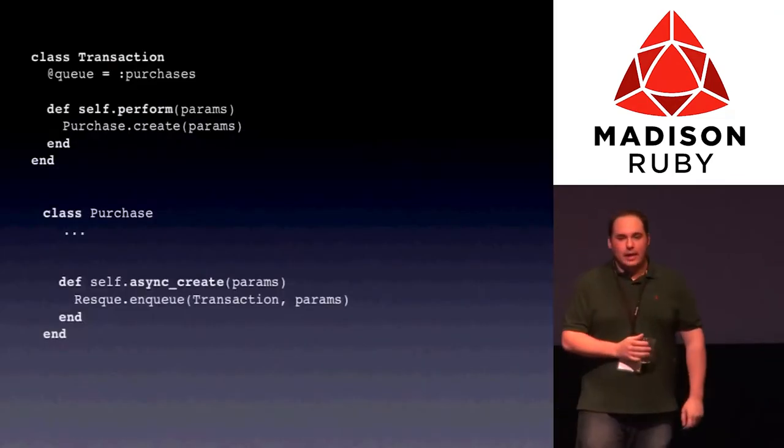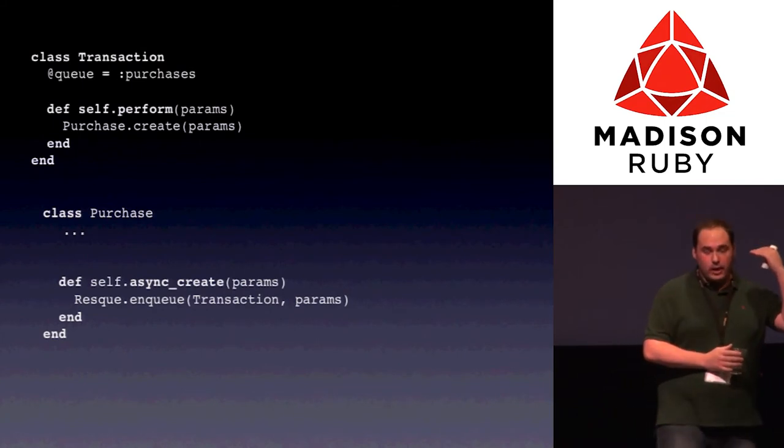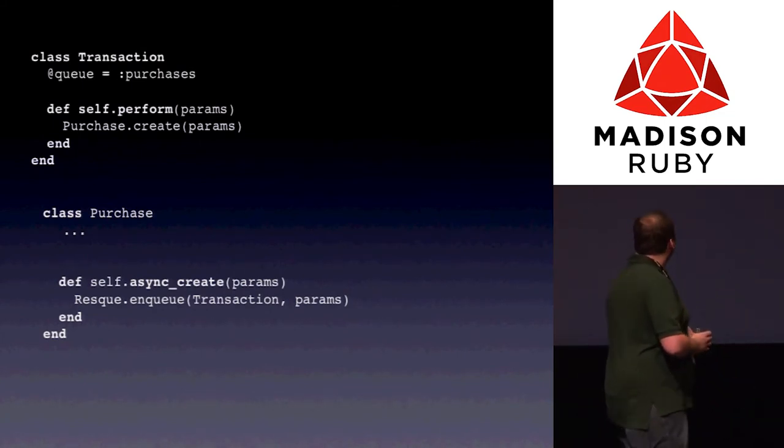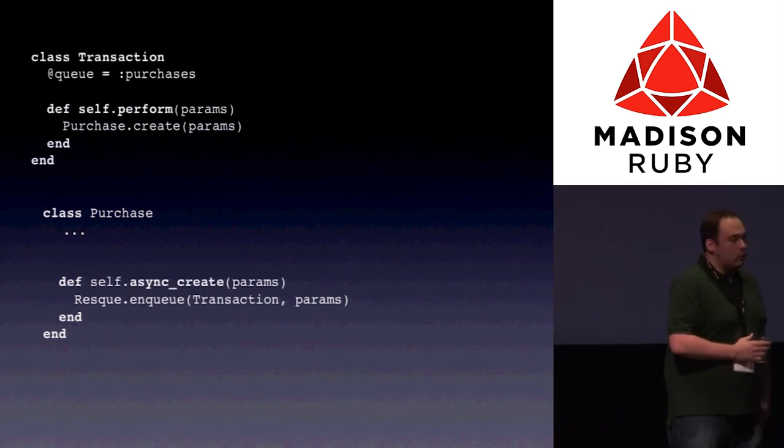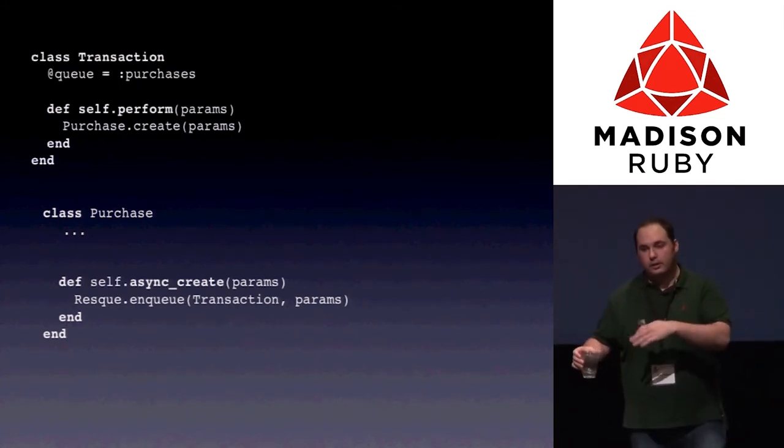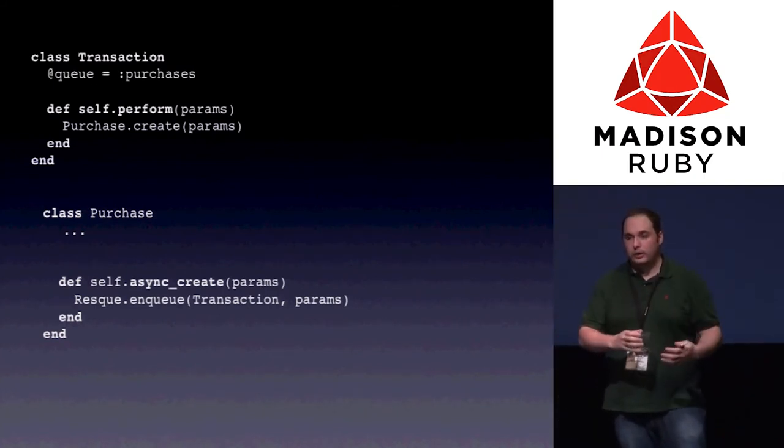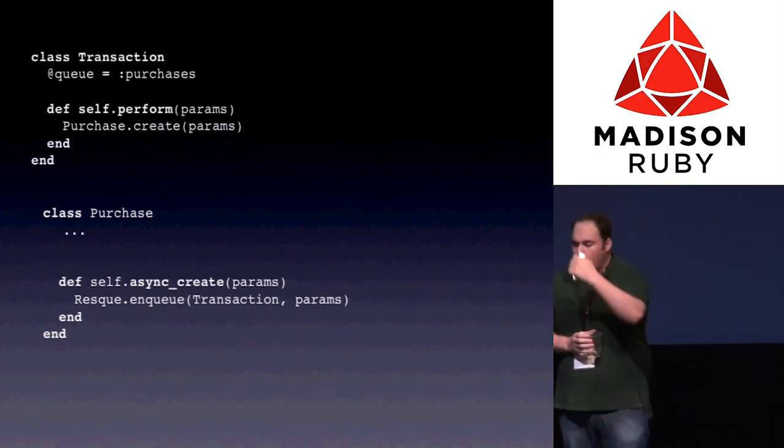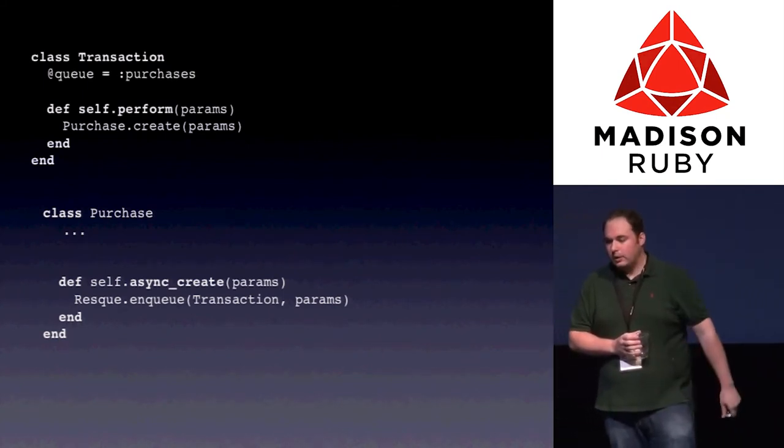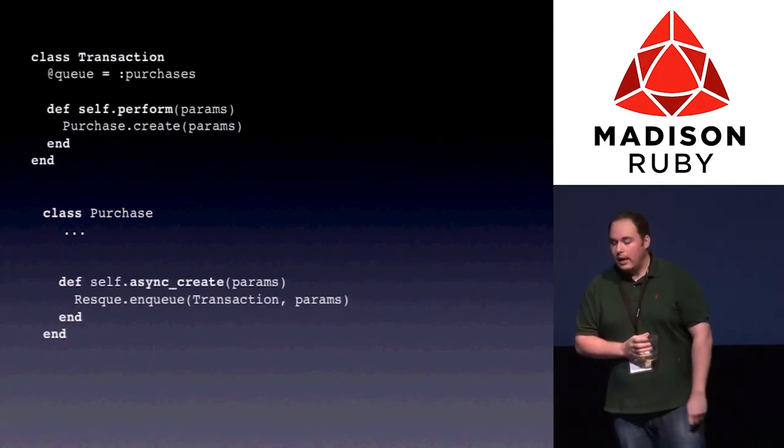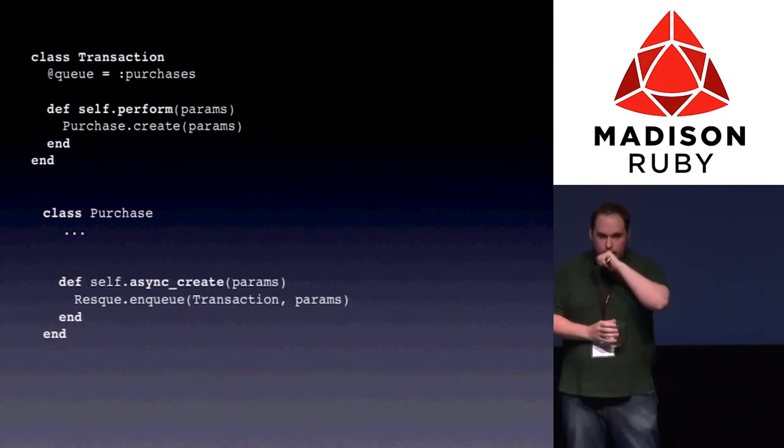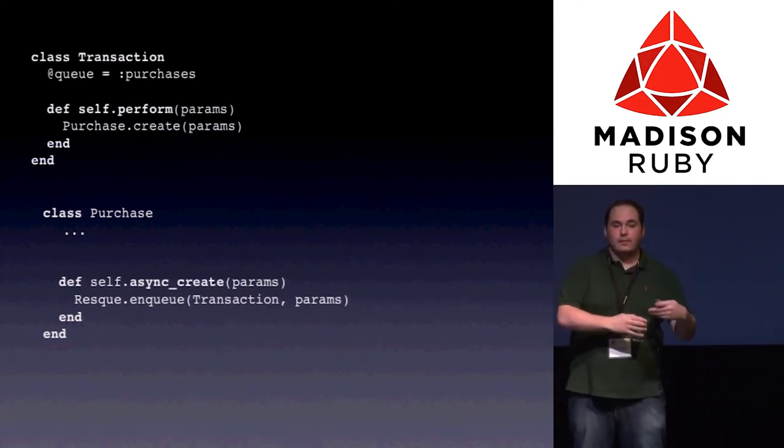And so, Resque is a queue system that sits on top of this and interacts separately from your database server. So we actually don't have to touch our database unless we really have to. We don't have to do it for the process of checking the queue and interacting with the queue. So here's the quick example. Given our prior controller action, how we could possibly set this up. We have an asynchronous create which enqueues our object with what we want it to do and some parameters. And that gets enqueued. And so now this transaction class will actually work it as soon as we start doing a resque work on that queue, on the purchases queue.